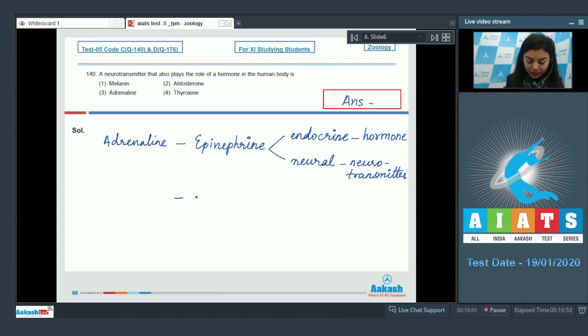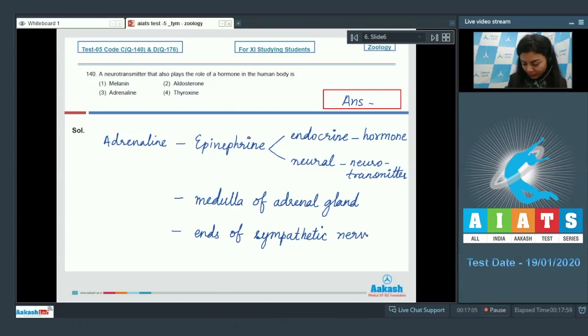This hormone is released by medulla of adrenal gland, and on its release it will bring on effects like increasing the heart rate, vasoconstriction, and so on. Adrenaline is also released at the ends of sympathetic nerve fibers where it is acting as a neurotransmitter. So the correct answer here is option number three, adrenaline. Whereas other options like melanin, aldosterone, and thyroxine are hormones, the right answer here is option number three.